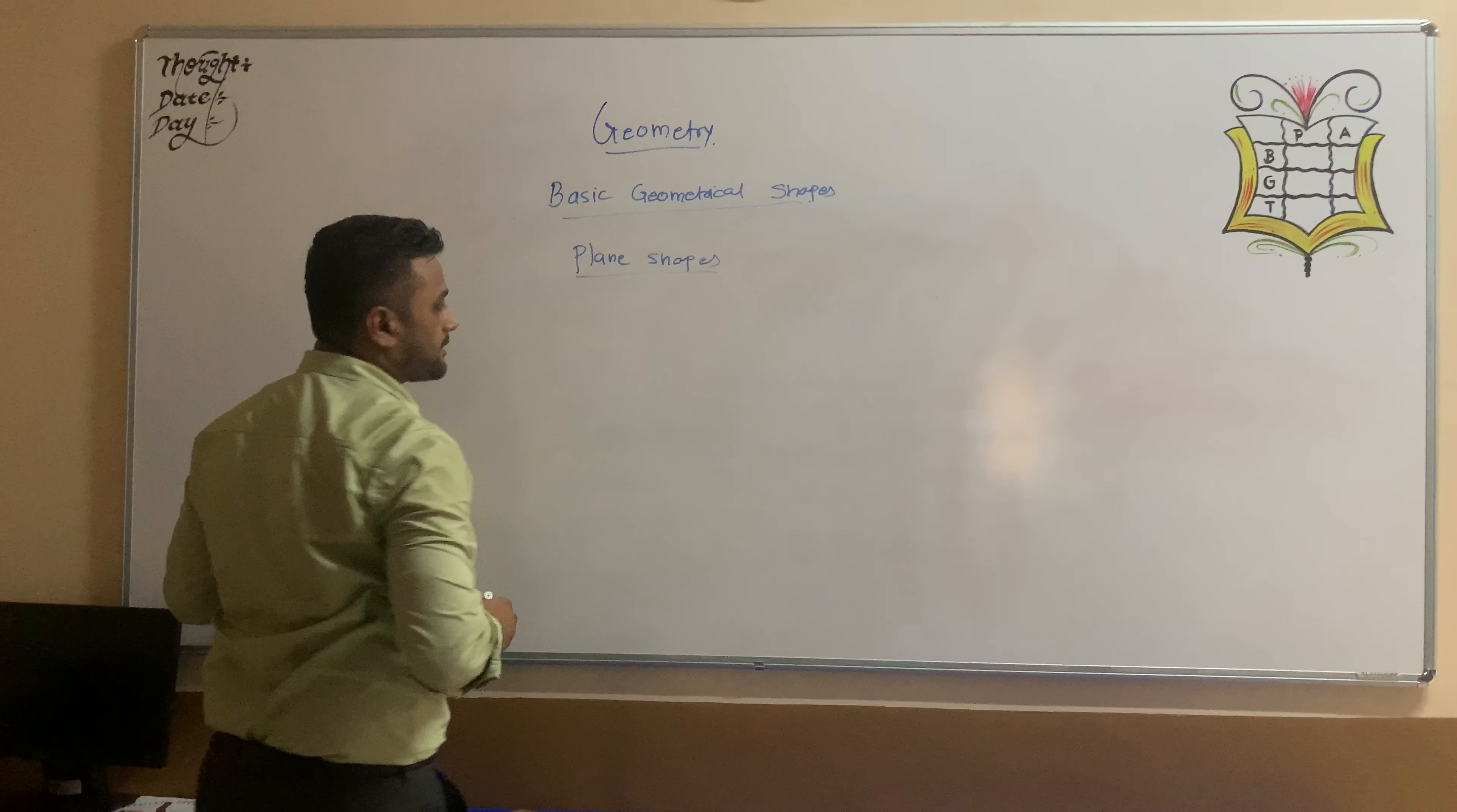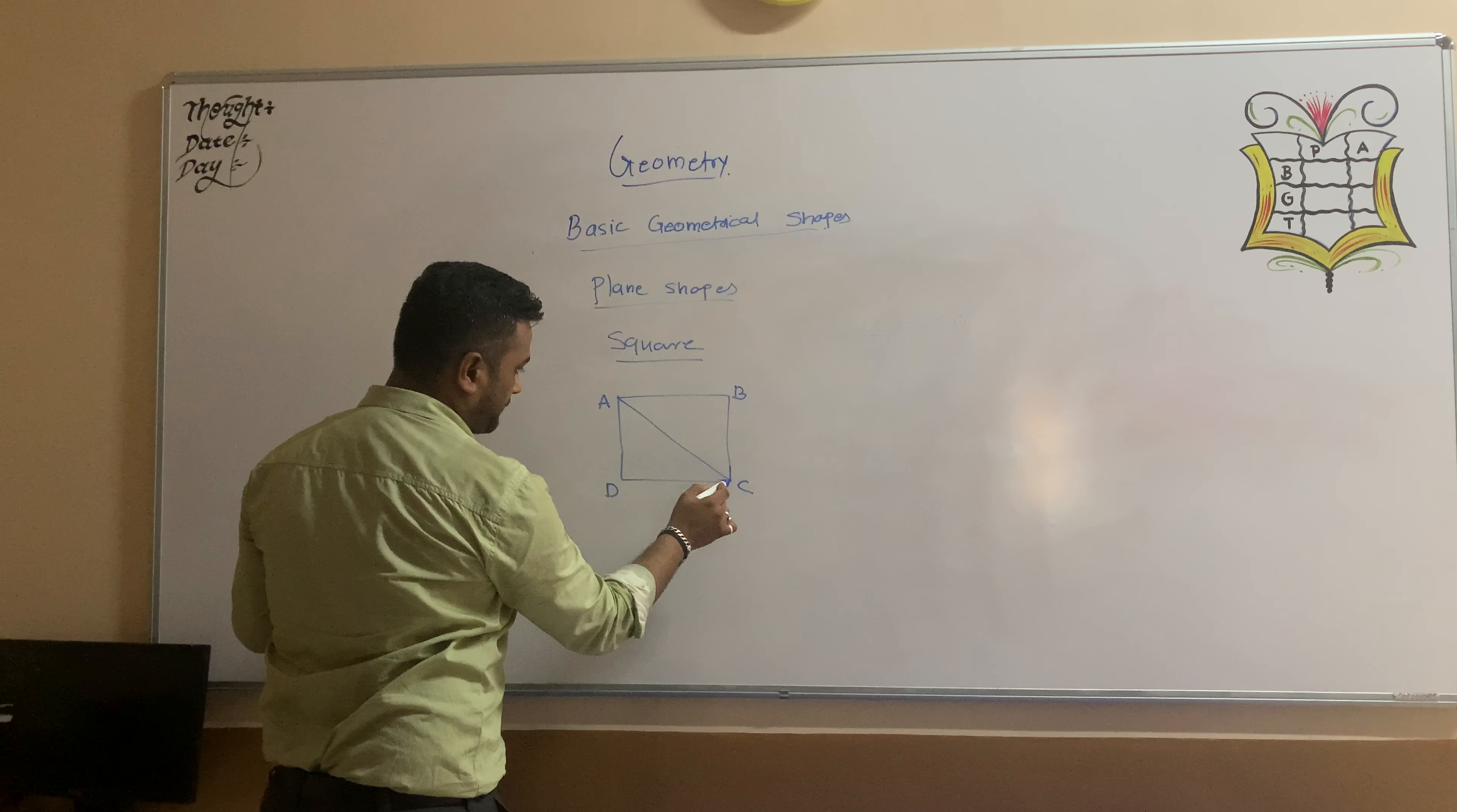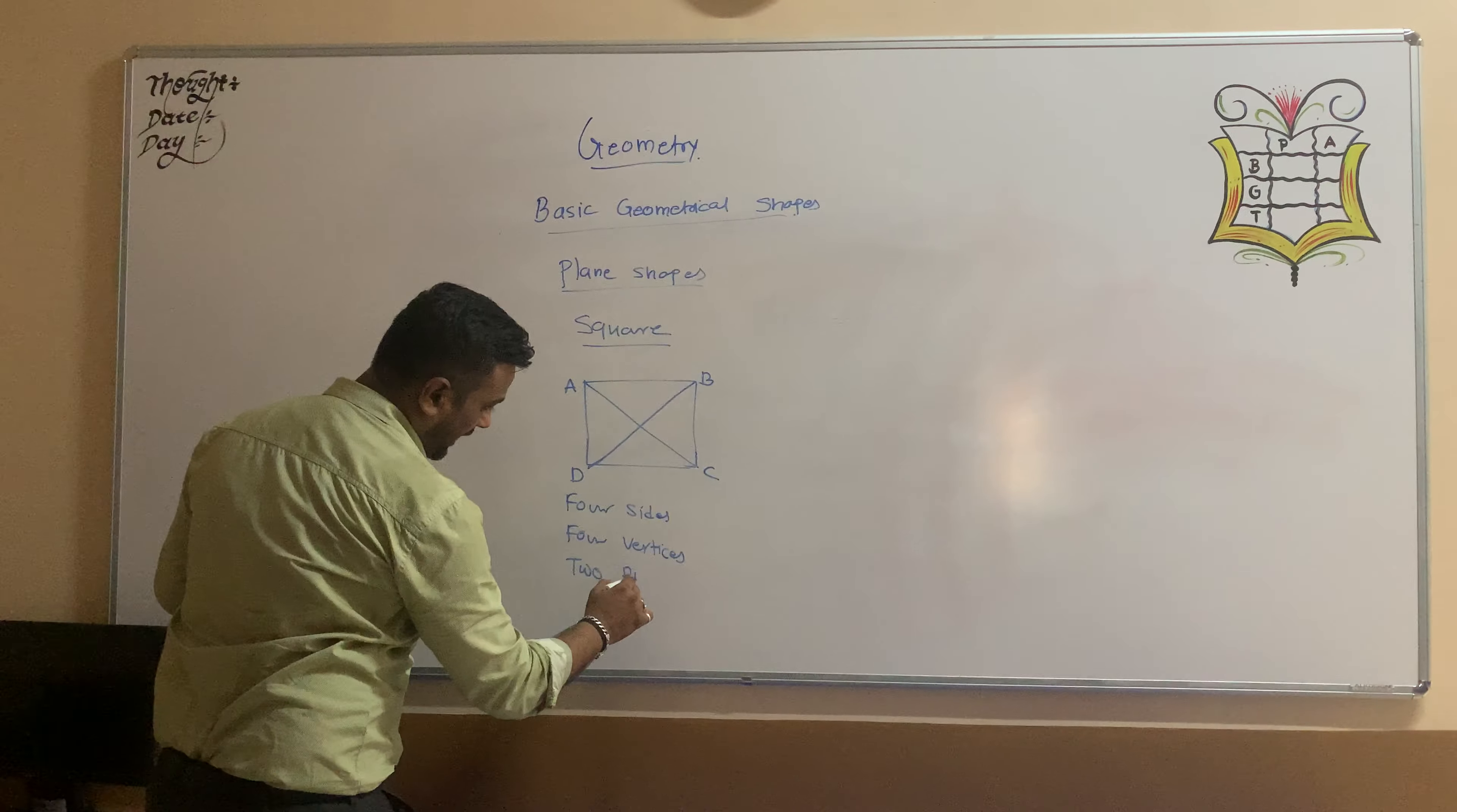So in plane set, first shape is square. Here square ABCD is shown in diagram. Square having four sides, four vertices and two diagonals.